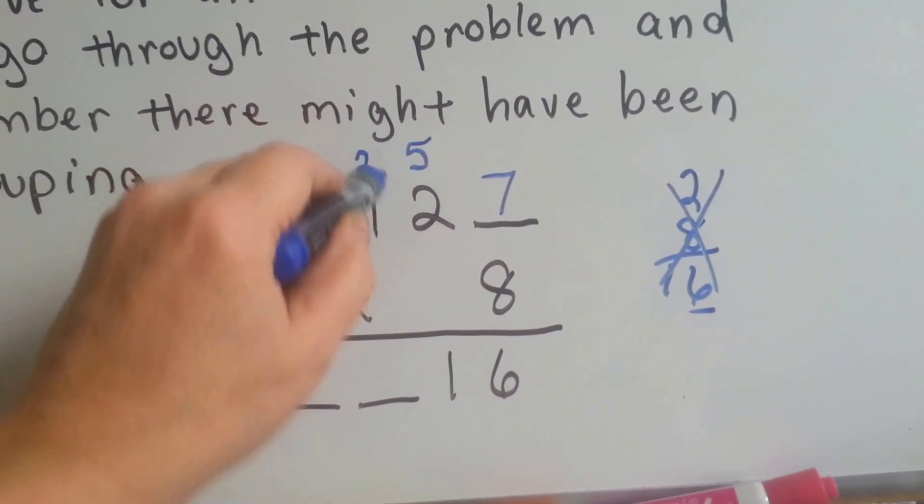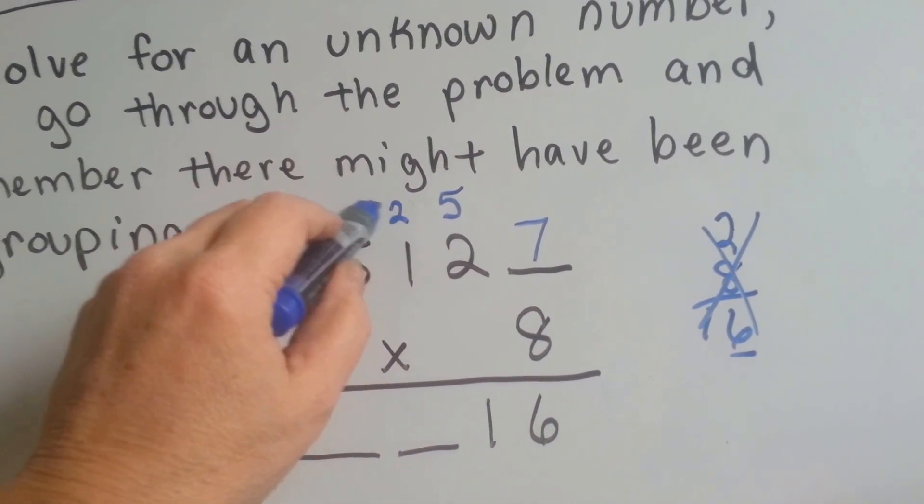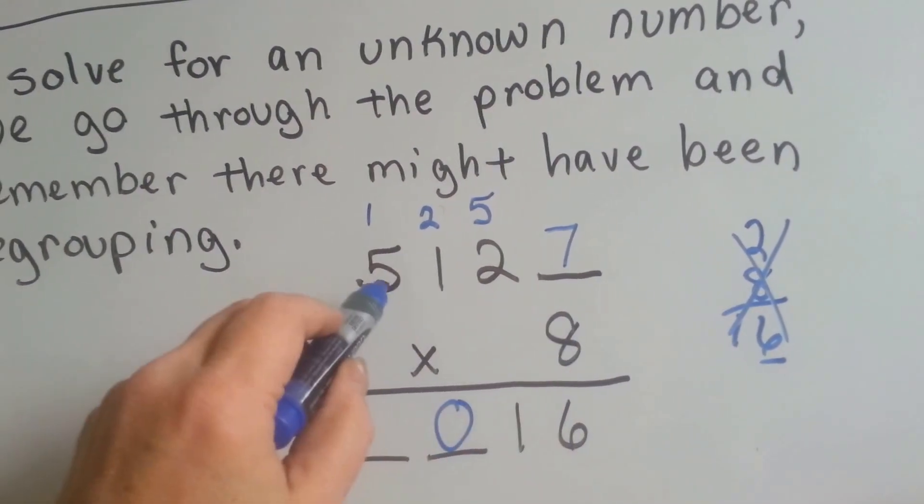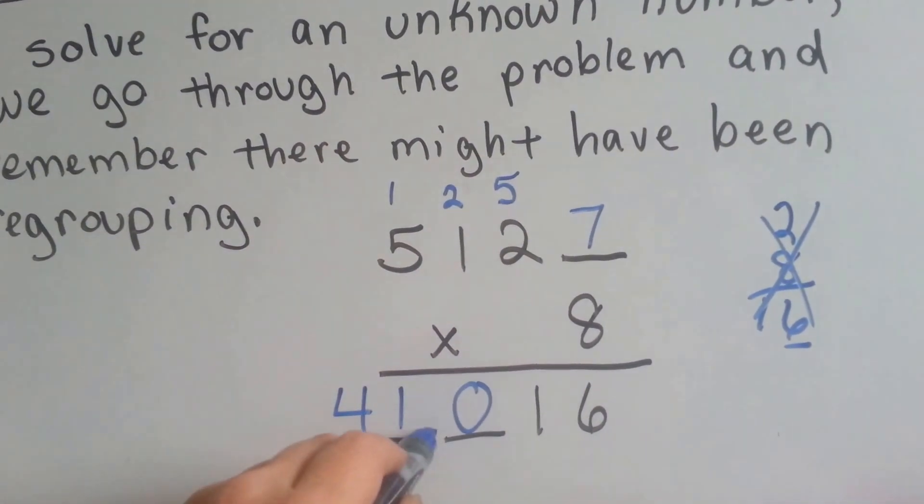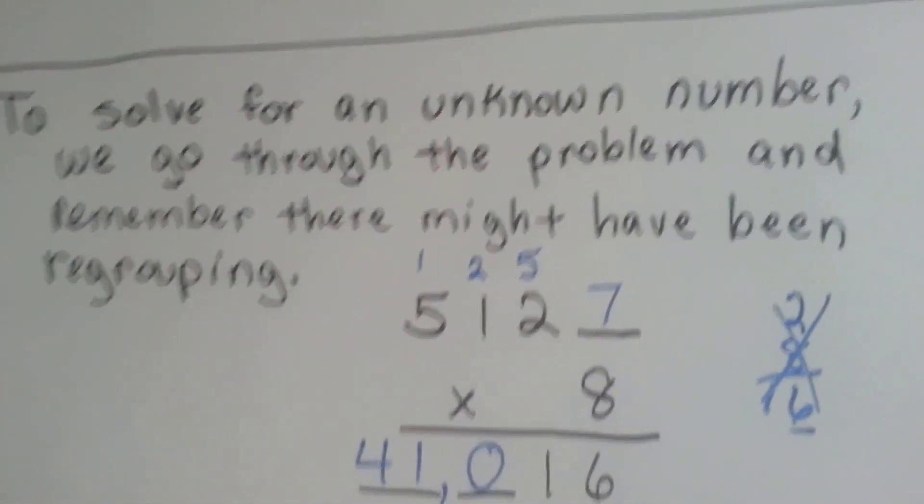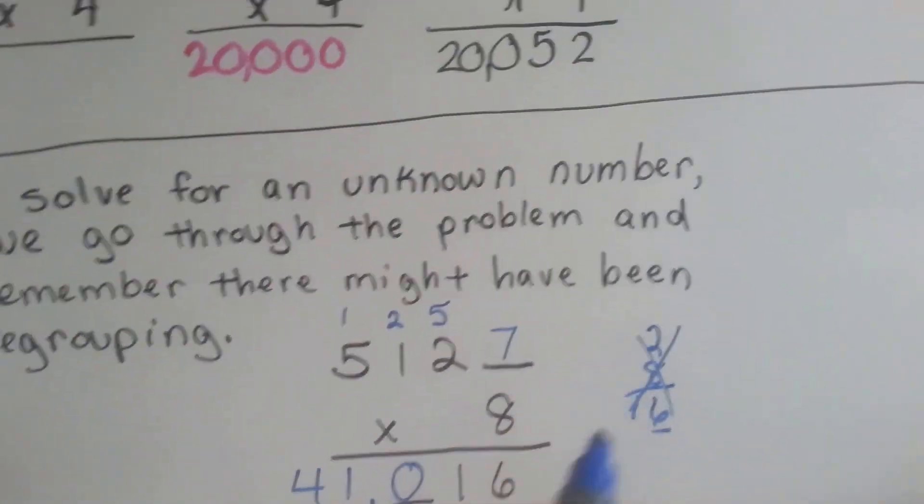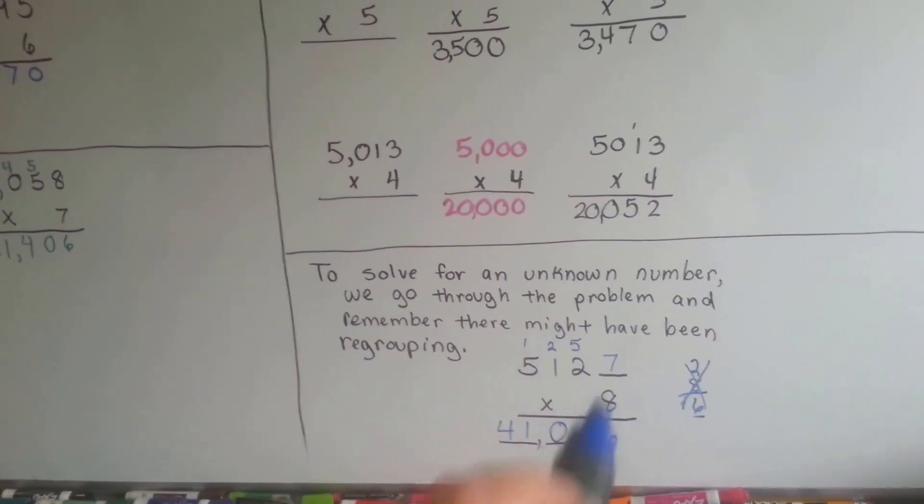So we could put the 2 here. We put the 1 down. 8 times 1 is 8, plus the 2 is 10. We carry the 1 and put a 0 down. And then 8 times 5 is 40, plus the 1 is 41. And we get 41,016. So you see how I did that? I just went through the 8 times table to try to find an answer that fit, that if the carryover worked, it would work.